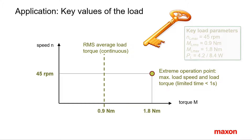Let's take specific values as an example. We assume that we need 0.9 Nm continuous torque and 1.8 Nm maximum torque for a quick acceleration to 45 RPM.